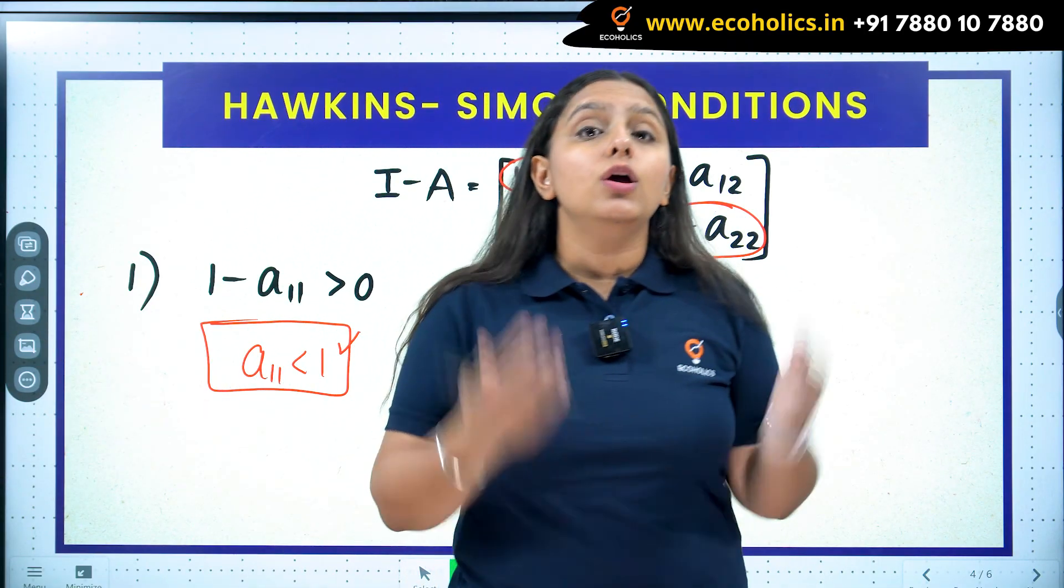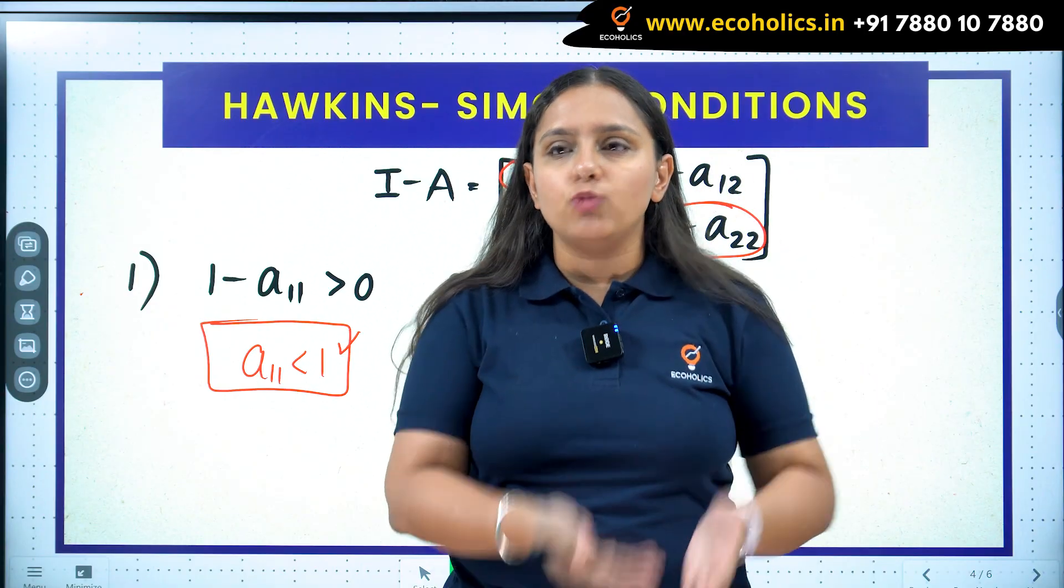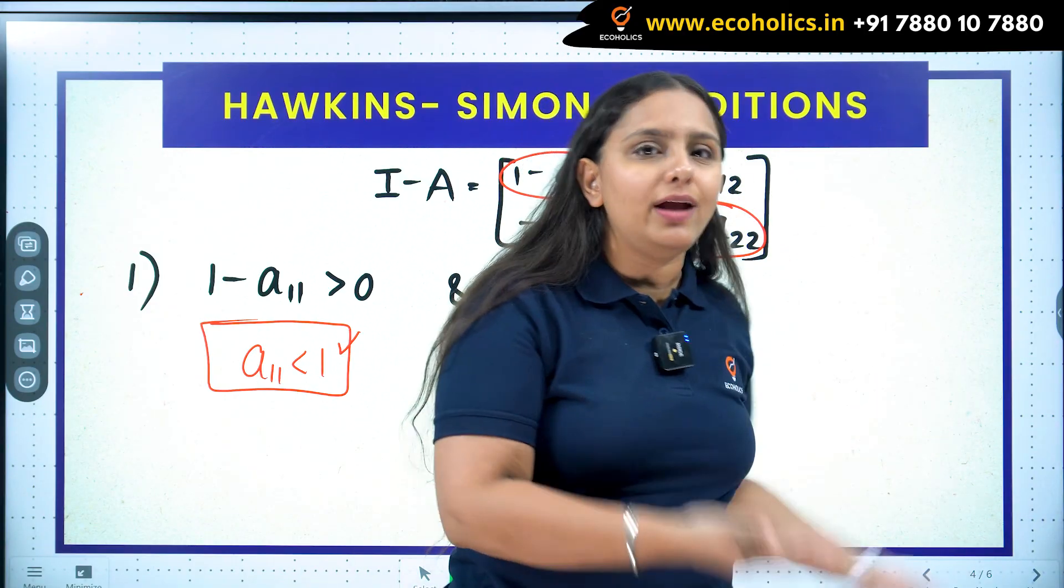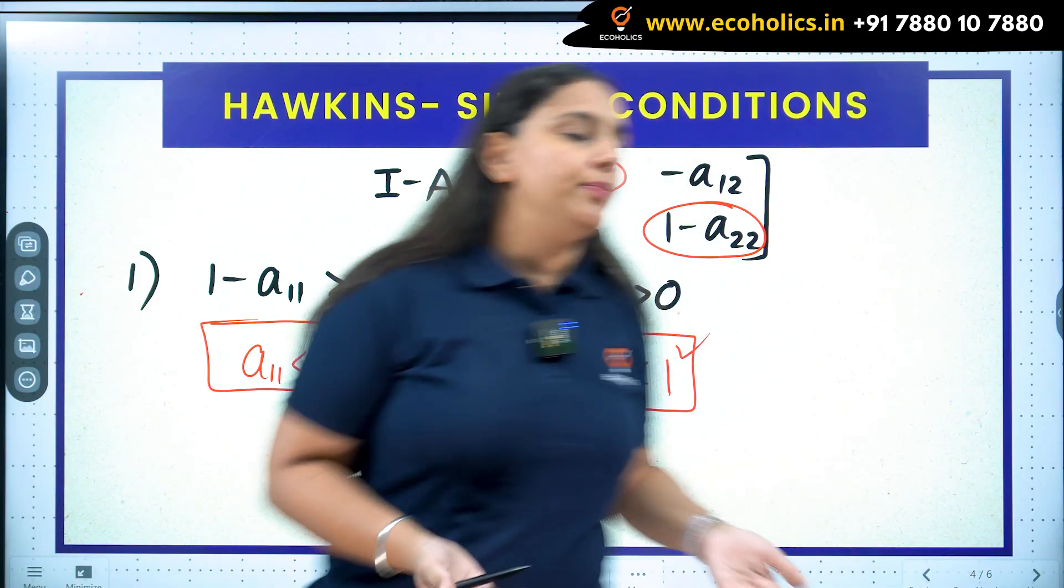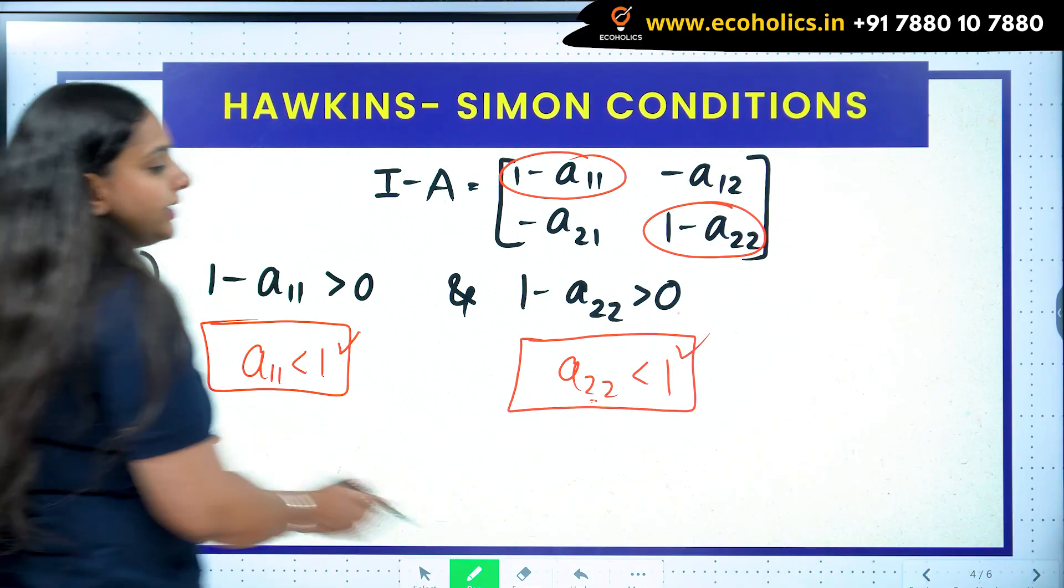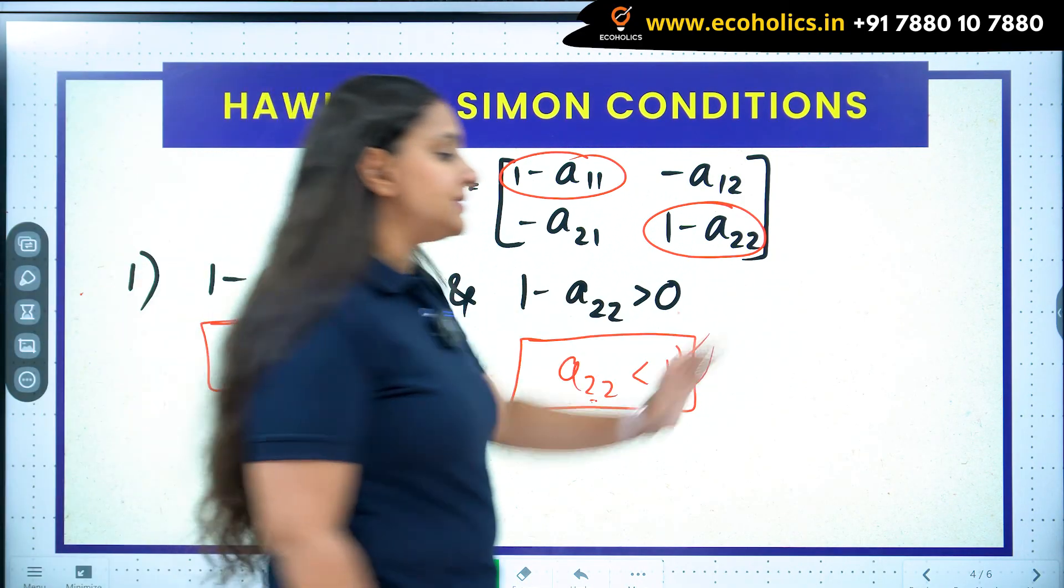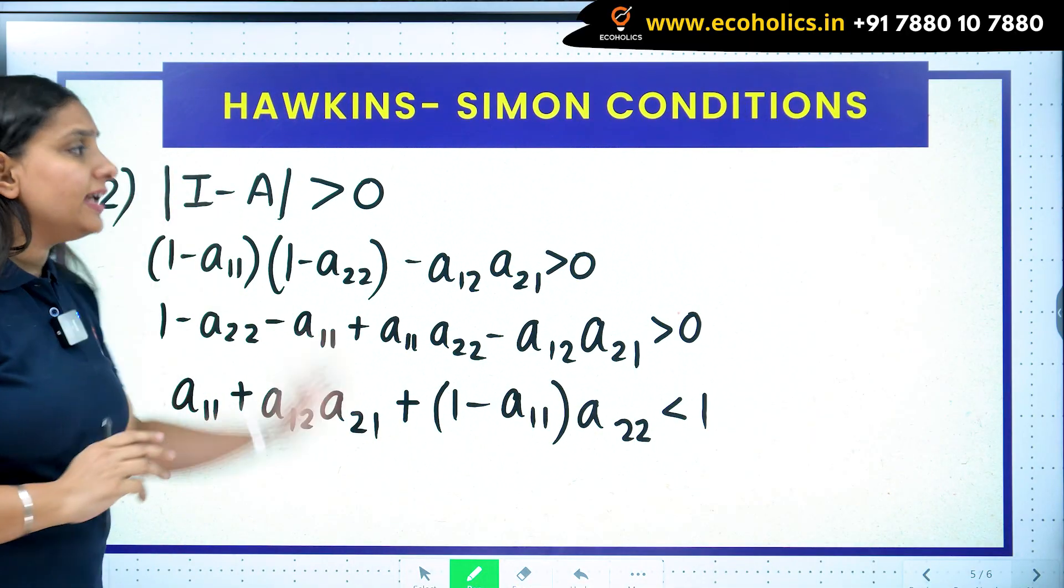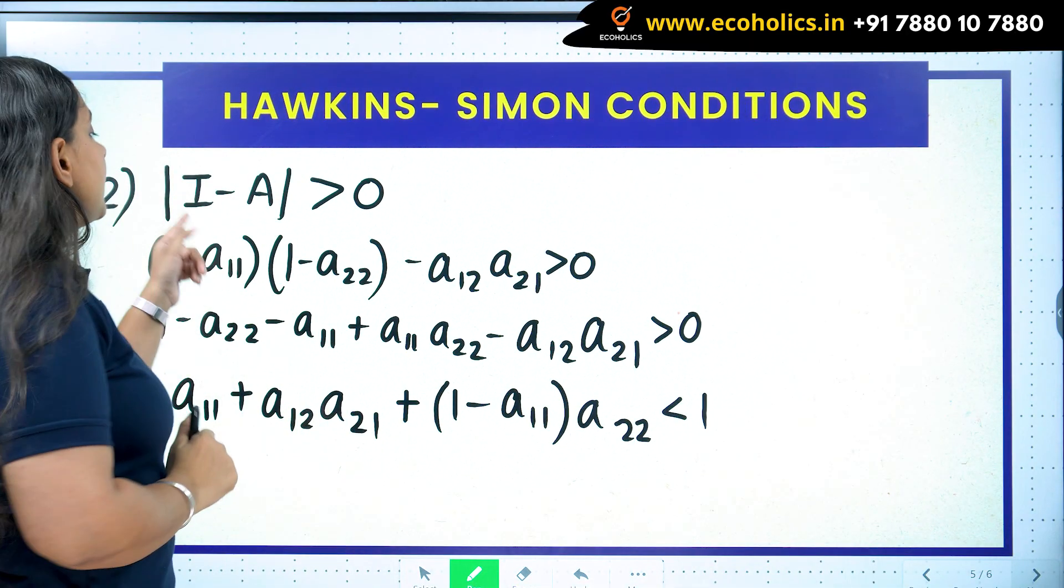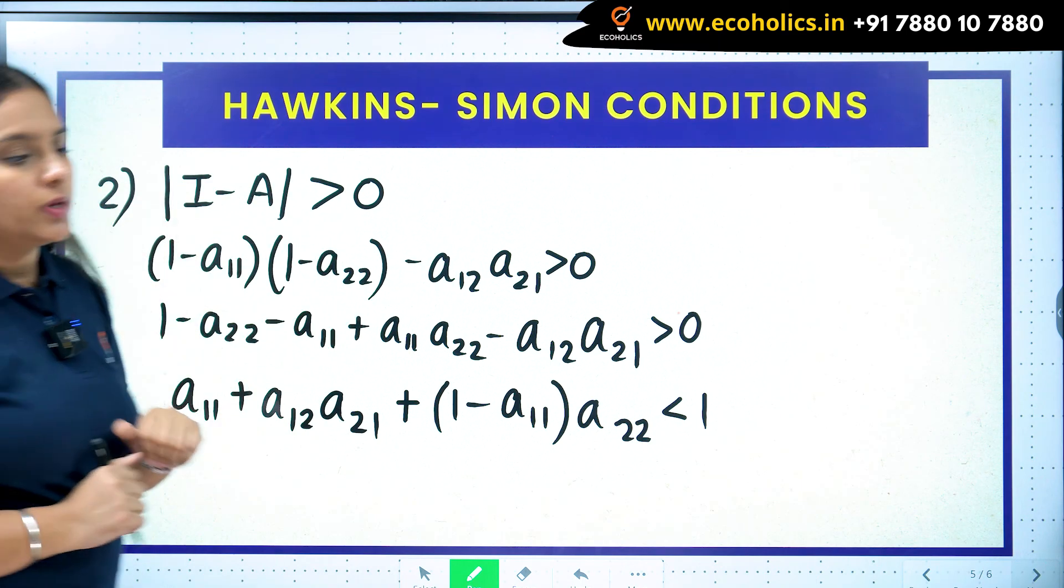Because this shouldn't happen: that industry is producing 100 units, whatever they produce they use it again for themselves. That doesn't make them an industry. It's not going to fulfill consumer demand. It's not going to fulfill the demand of raw material for other industries. So it doesn't make any sense in an economy. I want a_11 and a_22 strictly less than 1. This is the first Hawkins-Simon condition.